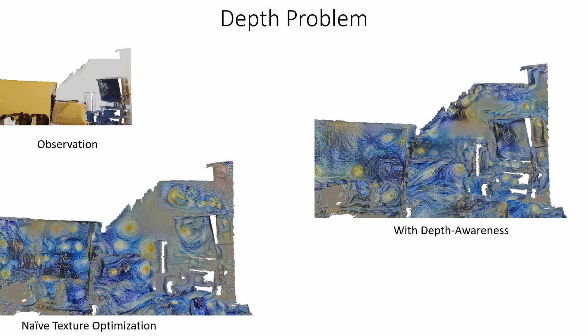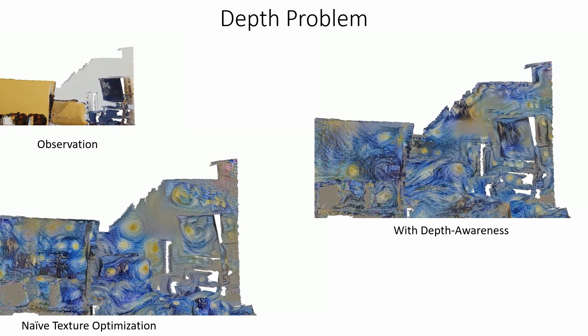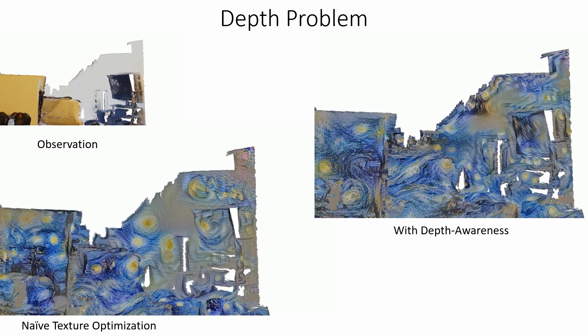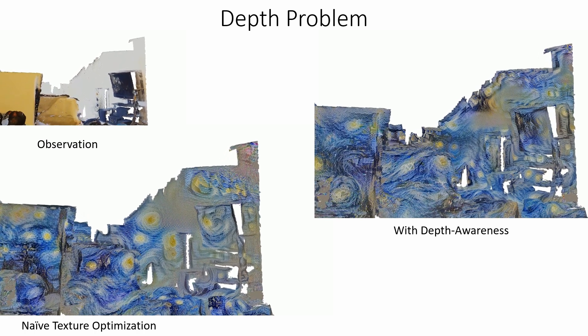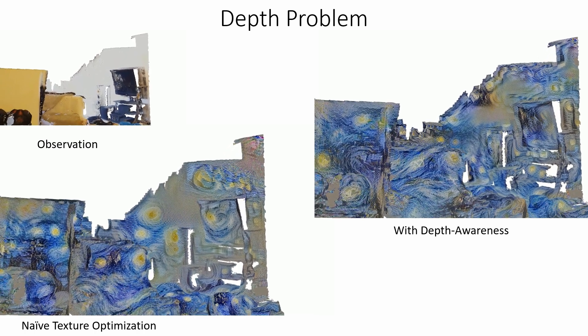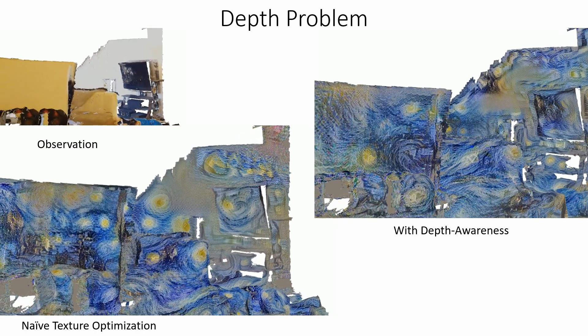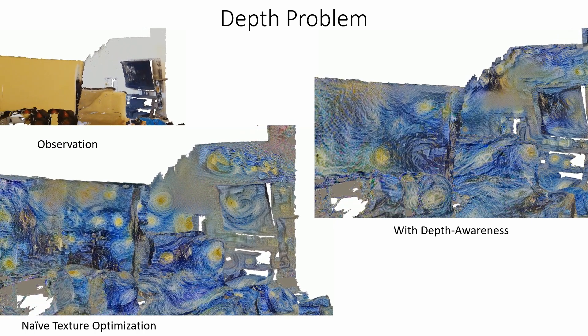When optimizing surfaces at different distances, stylization patterns can be equally large even when they are further in the back. In contrast, our stylization patterns are smaller in the background of an image. This way we can better capture the original depth.